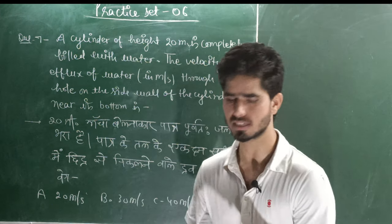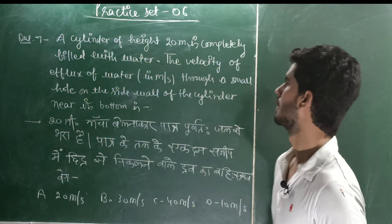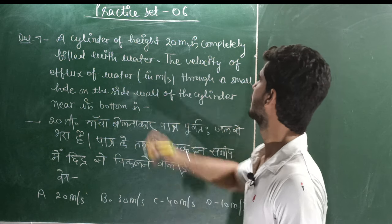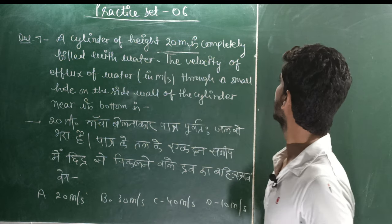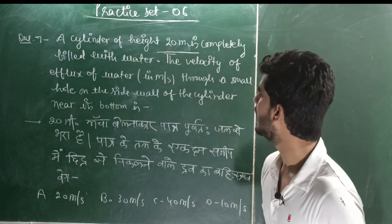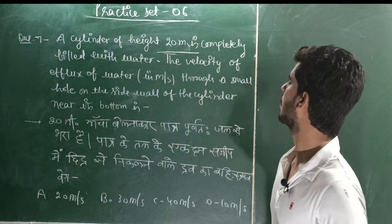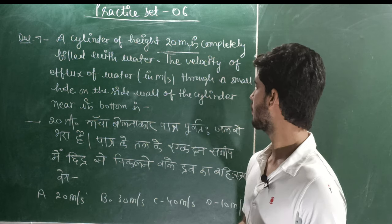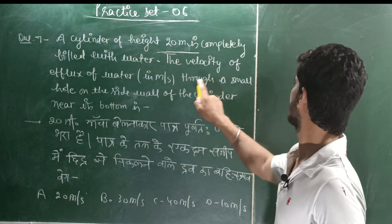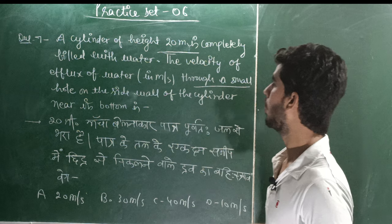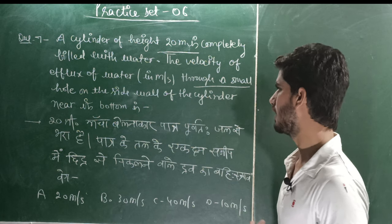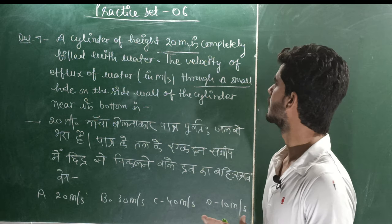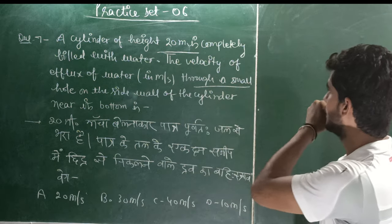Question number 7: a cylinder of height 20 meters is completely filled with water. The velocity of efflux of water through a small hole on the side wall near the bottom is to be found — this is a formula-based question using Torricelli's theorem.